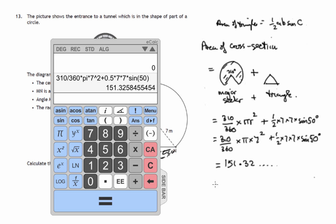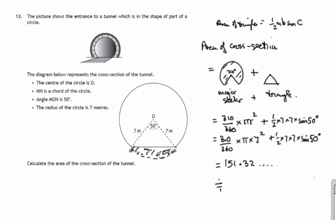So the area of the cross section is approximately, I'd better check whether we're given accuracy or not. No, we're not. Let's take it to one decimal place. So it's approximately 151.3 square metres. And that's to one decimal place.